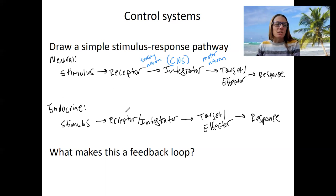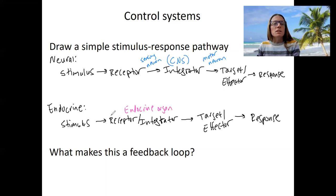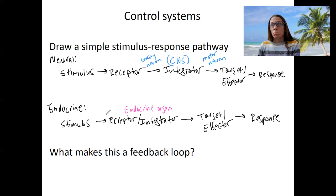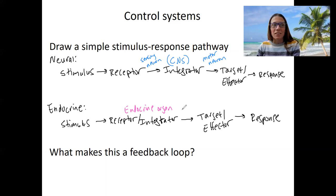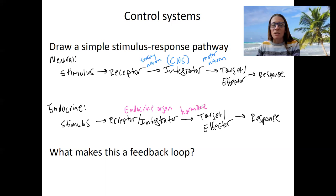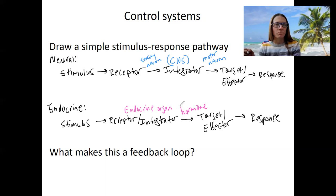For the endocrine system, this here would be the endocrine organ. The input signal can actually be direct — endocrine organs can just directly detect variables that are out of whack, like blood sugar. The output signal is going to be a hormone — that's what endocrine organs produce. And that hormone is going to target often more than one thing in the body to respond to that variable.